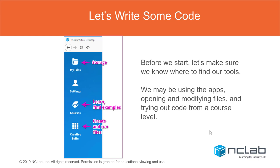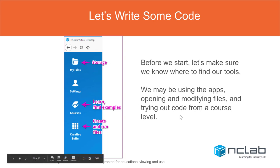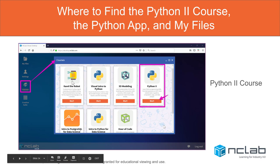Let's write some code. On your desktop, the courses let you learn and practice skills. Creative Suite is where you actually write, run, and save your files — that's important to know. You store your files in your online storage folder; typically if you're sharing them, you'll store them in your NC Lab folder. In the courses, there's Carol and the Python 2 course is in the course folder. Within the Python 2 course there are five units.